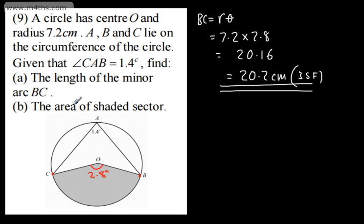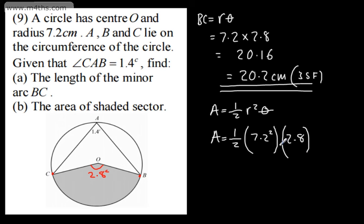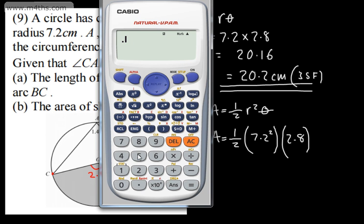We need to find the area of the shaded sector. We can write that the area is going to be 1/2 R squared theta. This is the area of the sector, so we can say this is going to be 1/2. We've got the radius, which is 7.2, and we're going to square that and multiply it by theta. Well, theta is 2.8 radians. So straight through the calculator, 0.5 times 7.2 squared multiplied by 2.8.